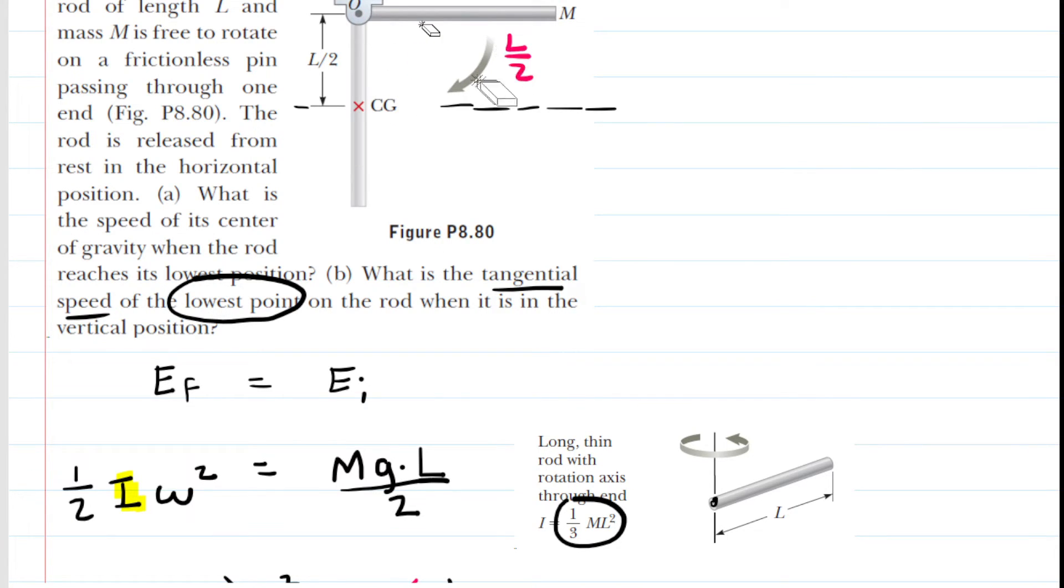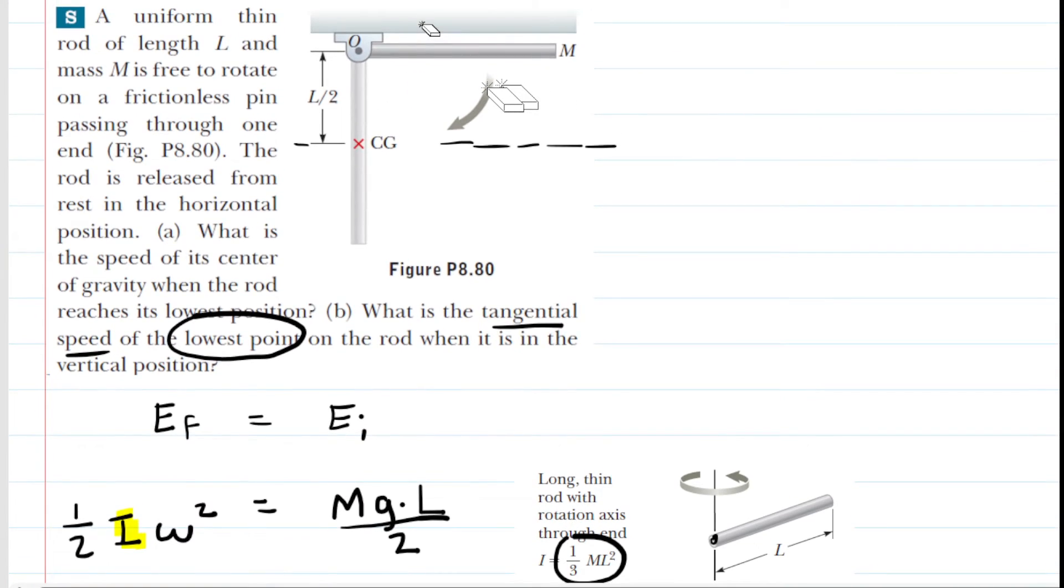we are asked to find the tangential speed of the lowest point on the rod. Now the lowest point, of course, is going to have a different value of R. Let's take a look at that. Here's the lowest point of the rod. It's moving with the same angular speed. It's very important to understand that whatever the angular speed of the center of gravity was is the same angular speed as the lower point.